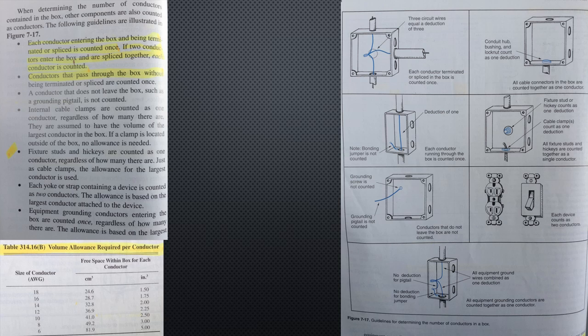Each conductor entering the box and being terminated or spliced is counted once. If two conductors enter the box and are spliced together, each conductor is counted. Conductors that pass through the box without being terminated or spliced are counted once. A conductor that does not leave the box, such as a grounding pigtail, is not counted.